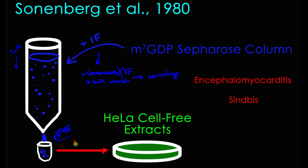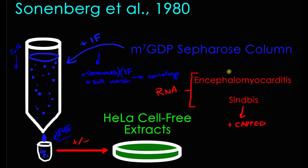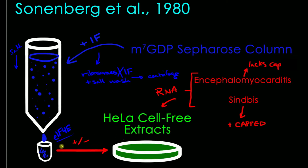What they could then do is either add or not add this cap binding protein to HeLa cell-free extracts — basically the contents of HeLa cancerous cells placed in a test tube. To this they added either one of two kinds of RNAs: encephalomyocarditis RNA or Sindbis RNA. These are viral RNAs, where Sindbis RNA does have a cap, but encephalomyocarditis RNA lacks the cap — it's uncapped.